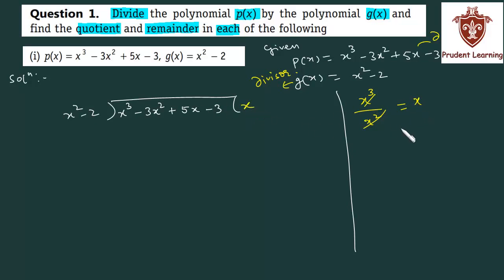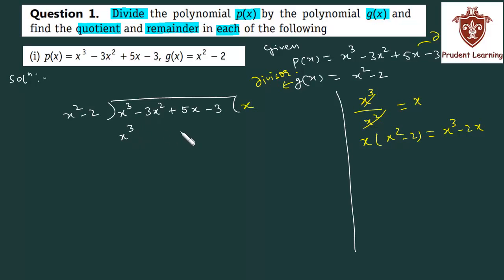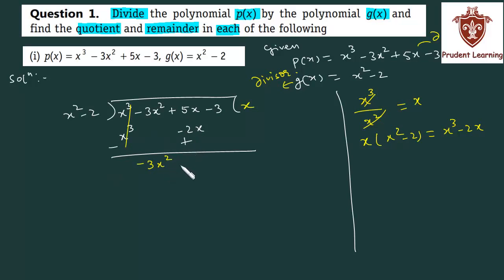x जो है वो quotient का एक term आ गया. अब इस x को multiply करेंगे divisor से: x times (x square minus 2) = x cube minus 2x. और इस x cube minus 2x को अब हम subtract करेंगे. जब subtract करेंगे तो minus of minus plus हो जाएगा. तो x cube minus x cube cancel हो जाएगा. बचेगा आपके पास minus 3x square. 5x plus 2x will give you 7x, minus 3 — इसको carry forward करते हैं.